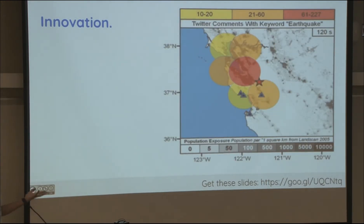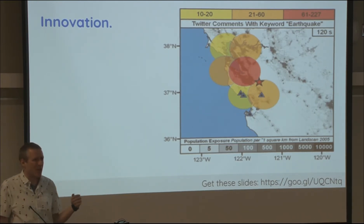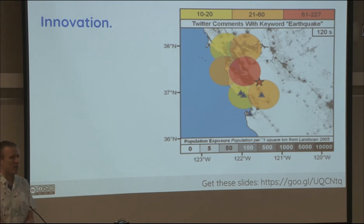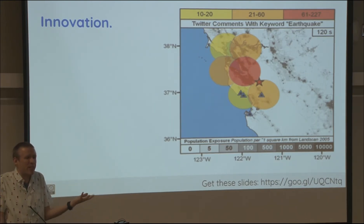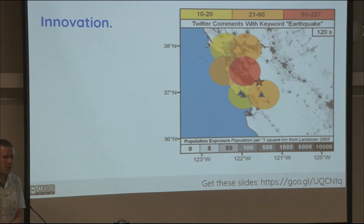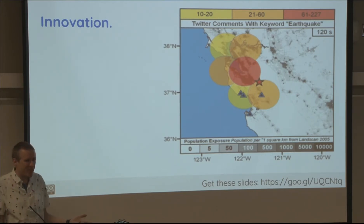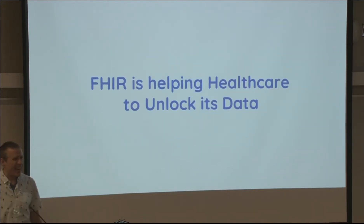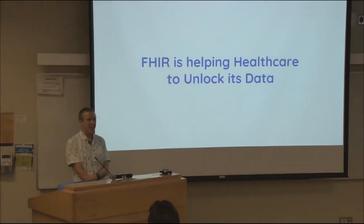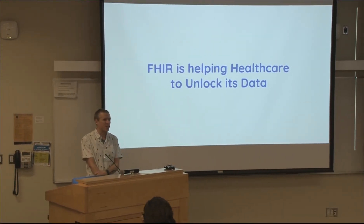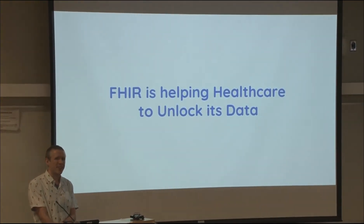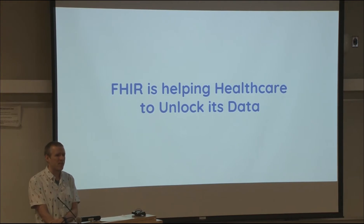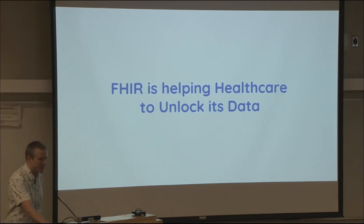Look at other industries and you see a very different story. Twitter's API was launched a few years ago and anyone can innovate on top of it. They learned they could detect earthquakes faster than the earthquake detection machines by looking for tweets of people saying the ground is shaking. We should be doing that stuff in healthcare. FHIR is here to unlock that next wave of innovation — it's a great time to be building innovative stuff on top of the healthcare ecosystem of data.